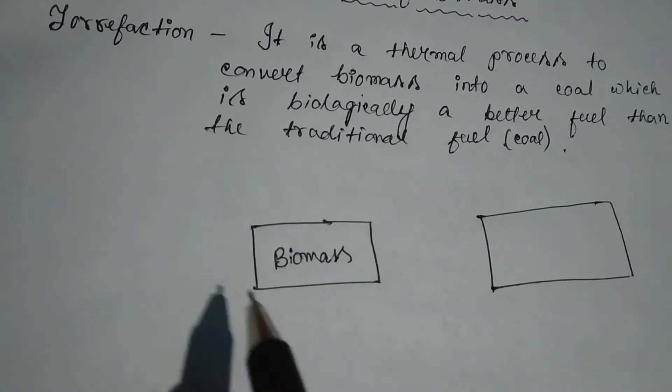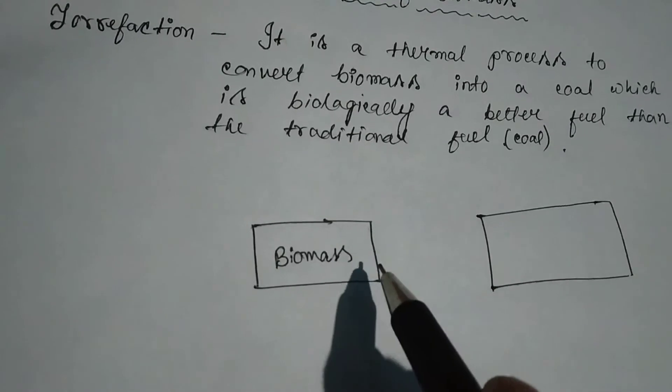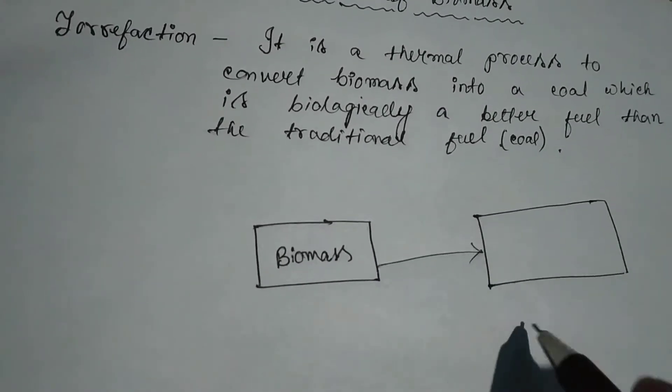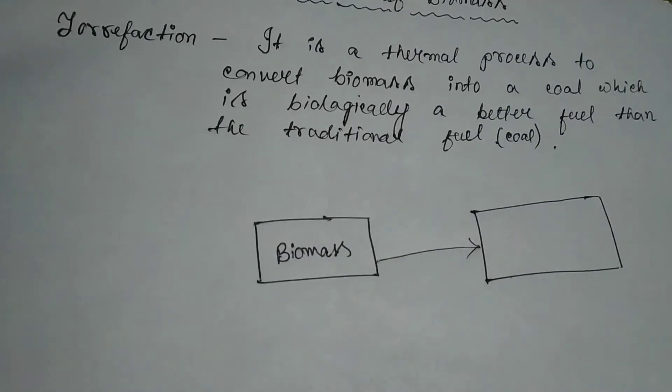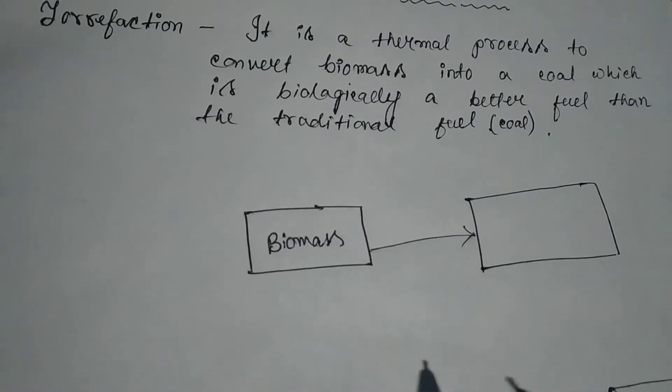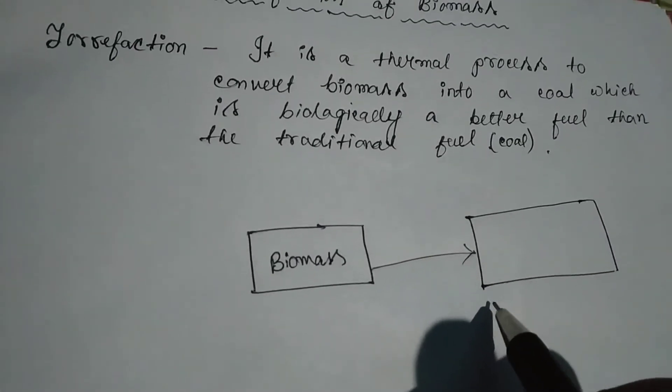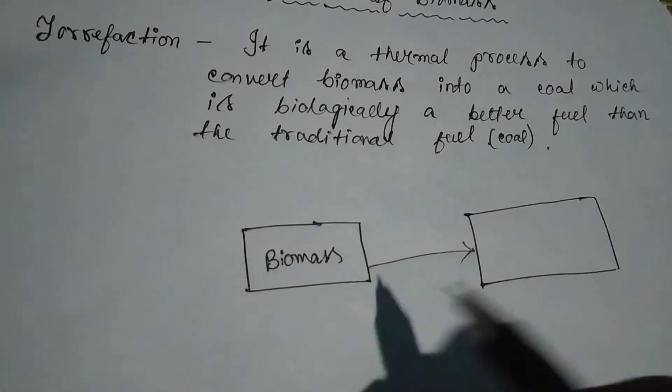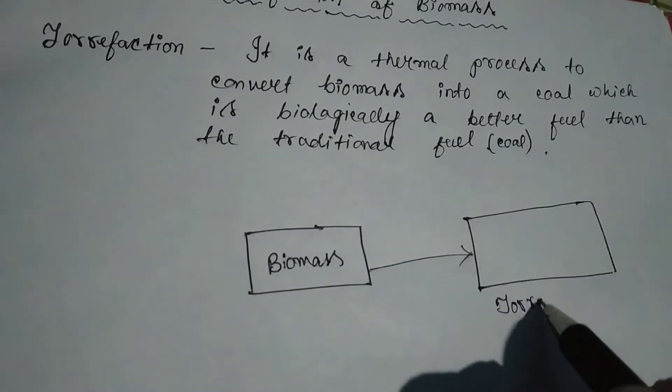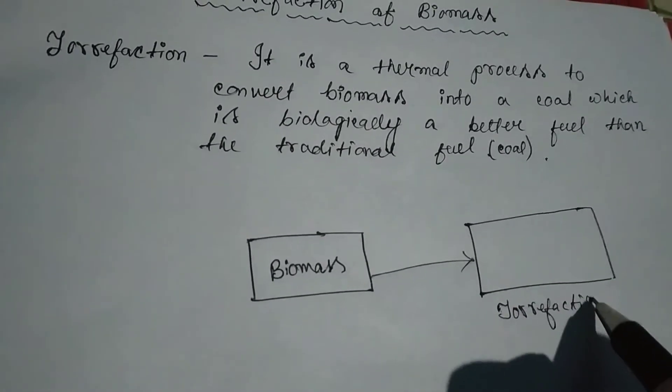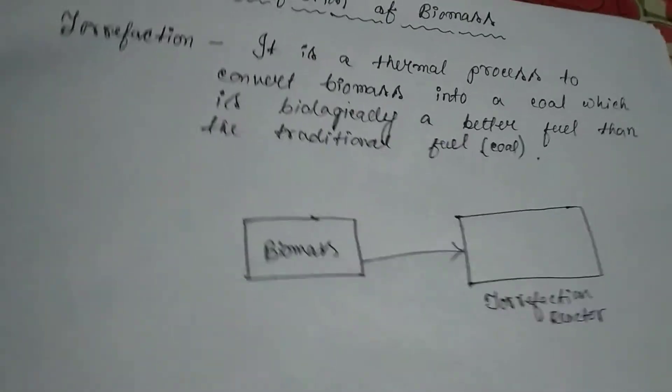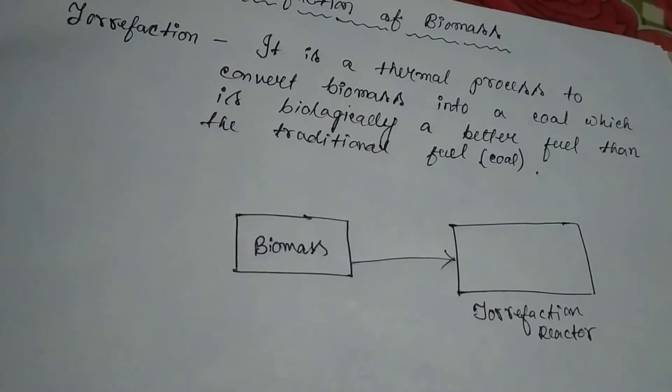This remaining biomass is transferred to the next chamber, and this chamber is the main chamber where reaction takes place. This reaction is called pyrolysis, and the reactor where the biomass is torrified is known as the torrefaction reactor.